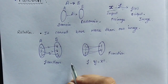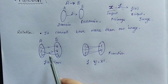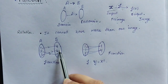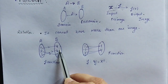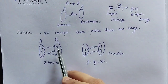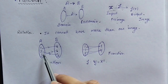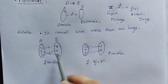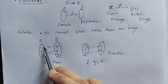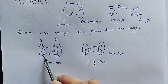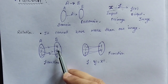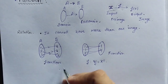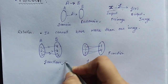Now let me explain with an example. This is the domain and this is the co-domain. Here 1 maps to A, 2 maps to C, and 3 maps to B. Each and every element in the domain gets a unique image, so yes, it is a function.